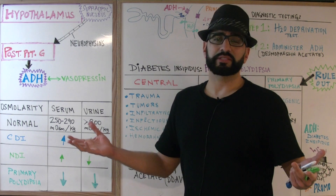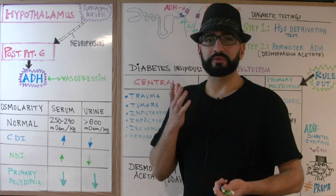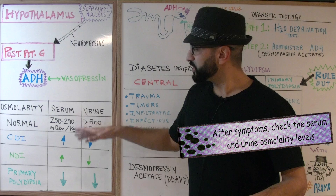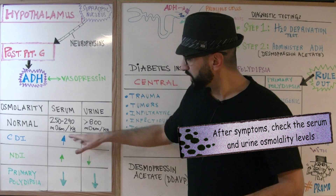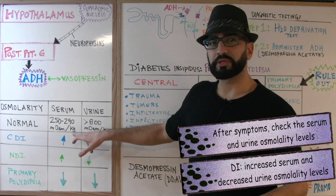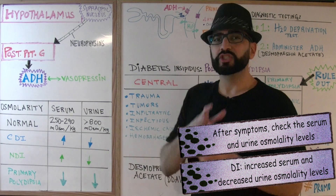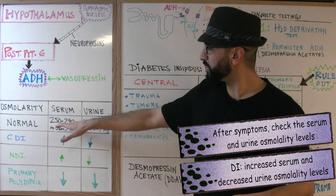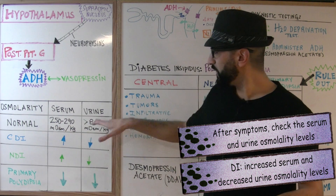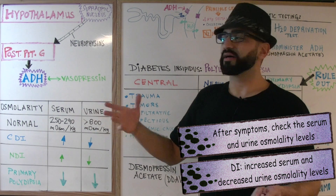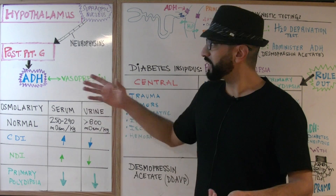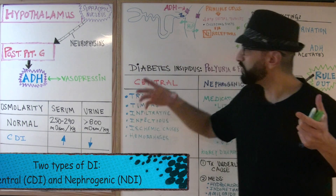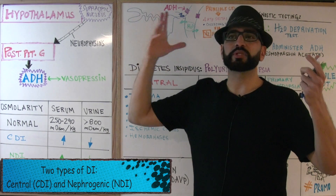We don't know anything else about the patient, but we're doctors, so we want to do investigations. We check the osmolality levels. The serum osmolality levels come back pretty high and the urine osmolality levels come back pretty low — above 290 for serum, down to about 150 to 200 for urine. That tells us ADH is not working for some reason. There are two main categories to think about: issues happening in the brain, and issues happening at the level of the kidneys.